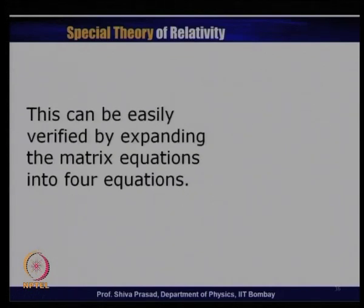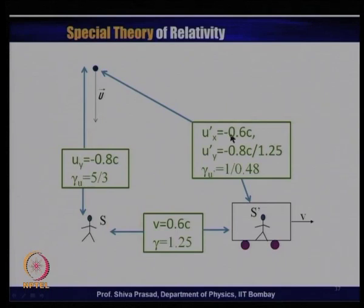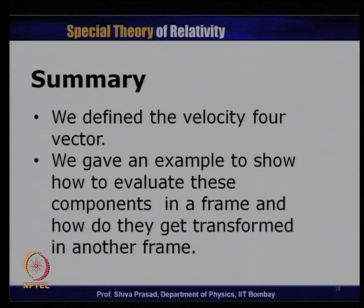This confirms that the matrix equation is true, as can be seen by expanding it into four equations. To summarize: gamma depends on v (relative velocity between frames), gamma_u depends on u (particle speed in S), and gamma_u' depends on u' (particle speed in S'). Today we defined the velocity four-vector, gave an example of evaluating its components in a frame, and showed how they transform into another frame.